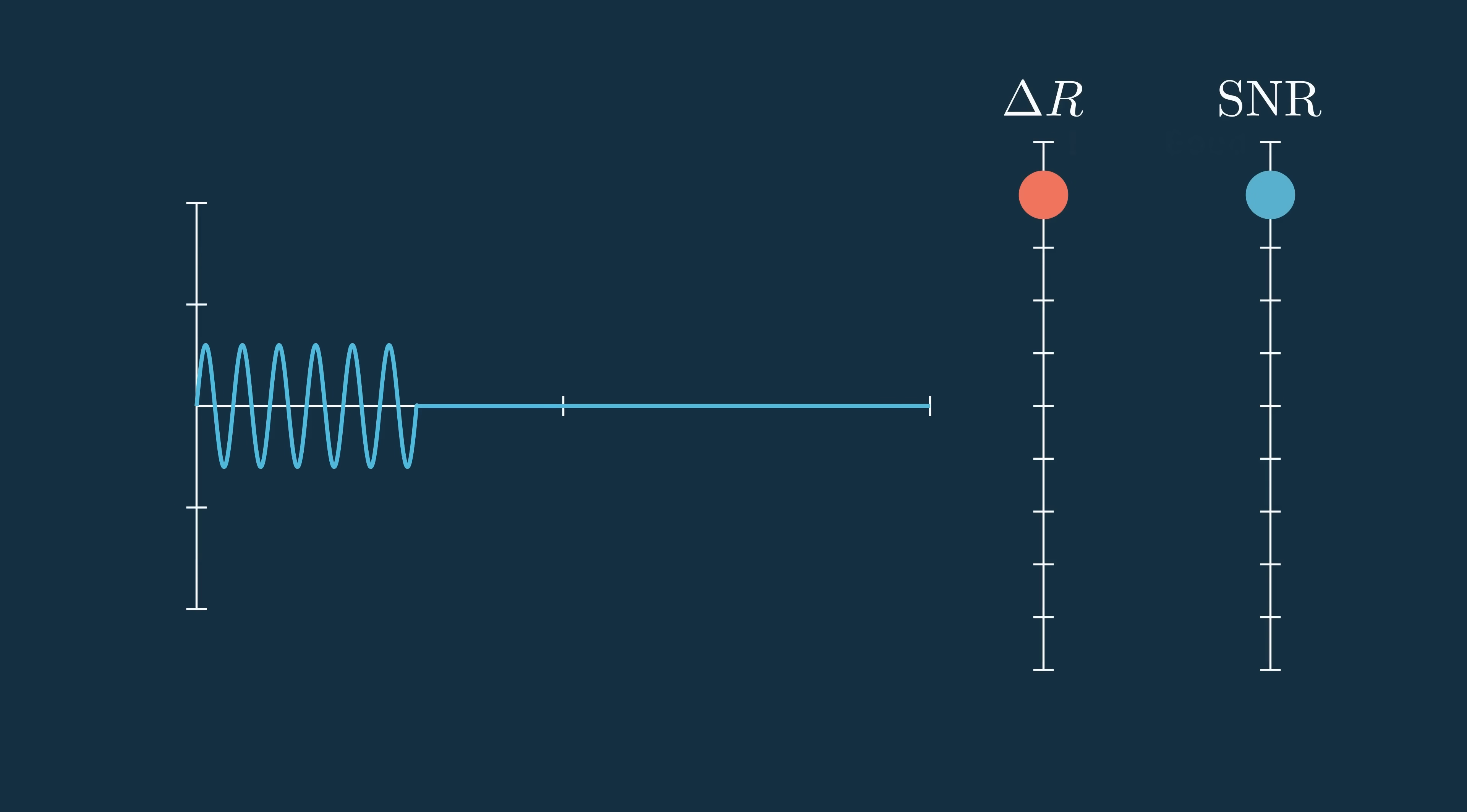There's two ways we could go about having both good range resolution and signal-to-noise ratio. One would be making the pulse as short as possible so we get a really fine range resolution and then we could find some other way to increase the signal-to-noise ratio. And the other would be making the pulse longer and find some way to make the range resolution better.